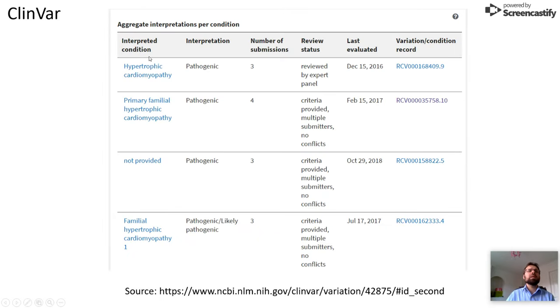Finally, if we look at the ClinVar database, we can see that the number of submissions is significant for this variant to be interpreted as pathogenic or likely pathogenic for all kinds of hypertrophic cardiomyopathy, including familial hypertrophic cardiomyopathy 1.